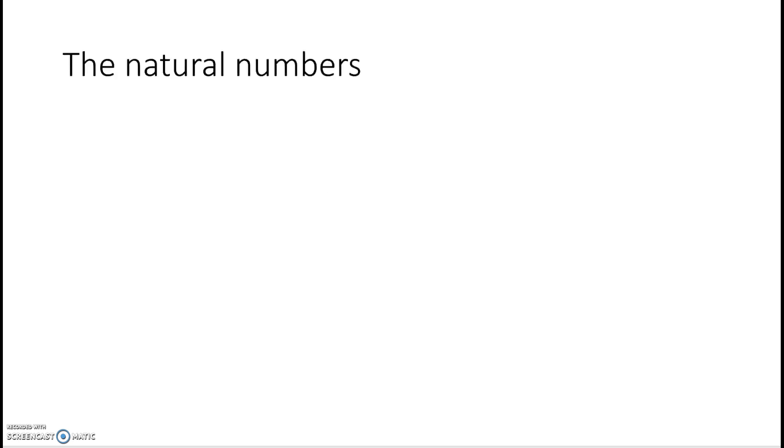The first numbers that we ever meet are the whole numbers. These are the numbers that children learn when they're little. They're also called natural numbers and we write these down using numerals. So these are the numbers such as 0, 1, 2, 3. These are the numerals but natural numbers can obviously go on much further than that.